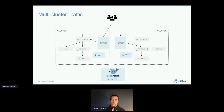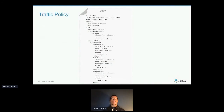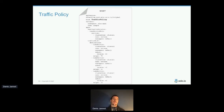With Gloo Mesh, which acts as a management plane for multiple Istio deployments, you can express this very simply using what we call a traffic policy. You say: when a request goes to the reviews service on cluster one, send 75% to cluster two v3, 15% locally to v1, and 10% locally to v2. Gloo Mesh then translates this into the corresponding local Istio objects. If you disconnect Gloo Mesh tomorrow, it still works.